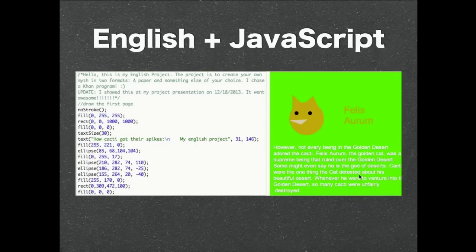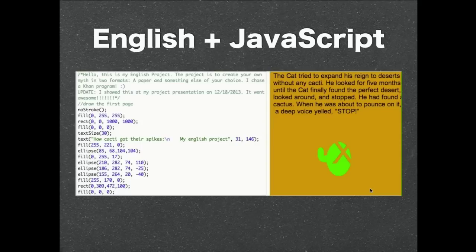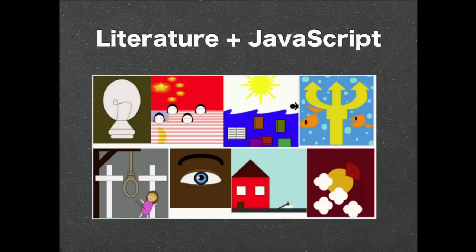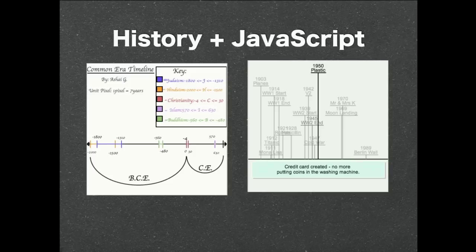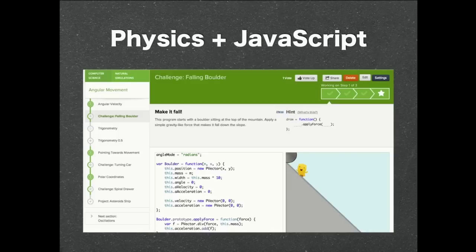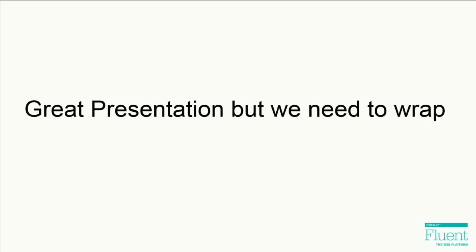With English, somebody made this English project and presented it to their class — you can see in the comments they got really happy because everybody liked their presentation. They just put their story in an animated form. With literature, a local high school teacher did this project where everybody drew pictures of book covers. With history, you could make a timeline. With physics, you could actually really learn physics using programming examples.